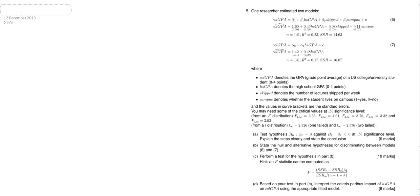This is the tutorial for question 5 from the 2012-2013 paper. One researcher estimated two models. The models relate to how a student's performance, measured as grade point average GPA, can be explained by a number of other variables including HS GPA, which is their high school grade point average. Skipped is the number of lectures skipped per week, and campus denotes whether the student lives on campus, one is yes, zero is no.